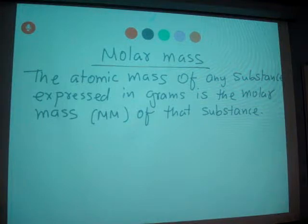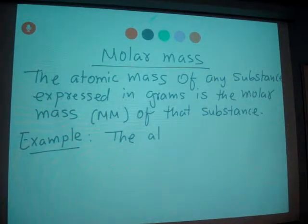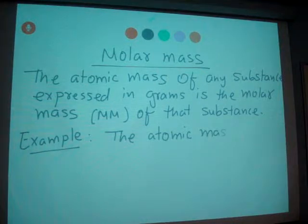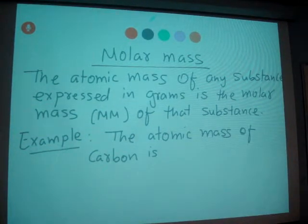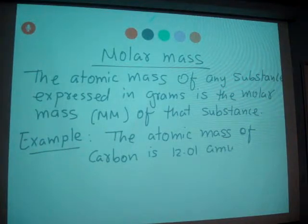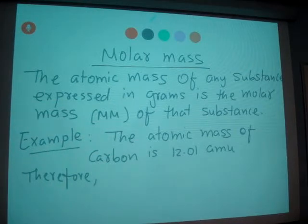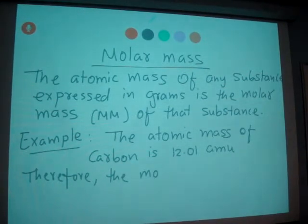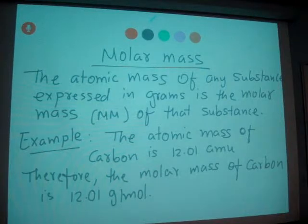Now let's say for example, we are talking about carbon. We know that from the periodic table, the atomic mass of carbon is 12.01 AMU. So therefore, the molar mass of carbon is 12.01 grams per mole. That's how we can interpret it.